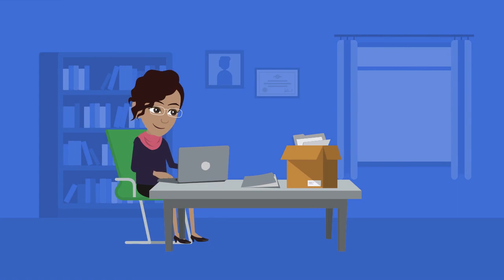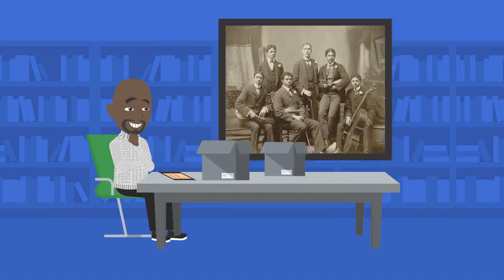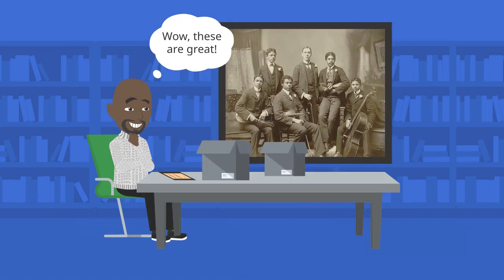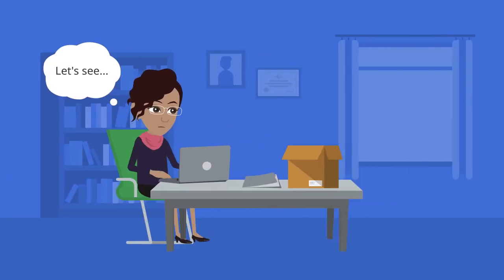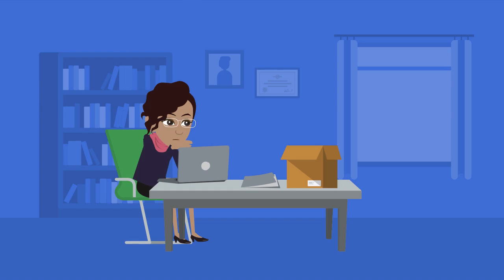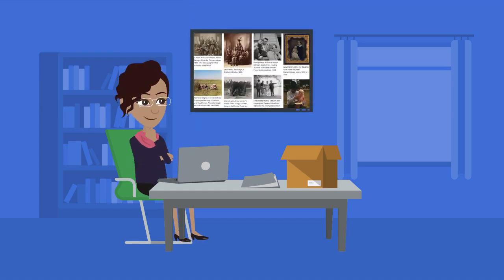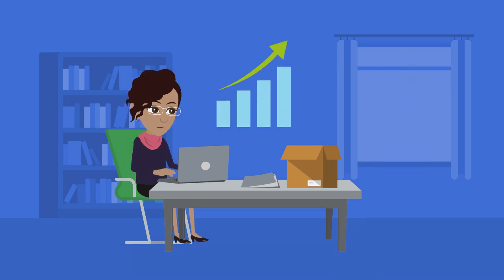Mia was writing a grant for digitizing a collection of photographs from her university's archives. Their local history photo collection had many images that were popular with people who visited the archives. She wanted to digitize this unique collection for easier access by anyone near or far. The grant required her to justify the need for this. Mia knew that people would benefit because a small part of the collection had been digitized already, and she noticed that people had been sharing those images on social media.